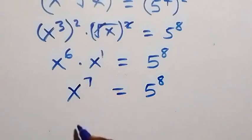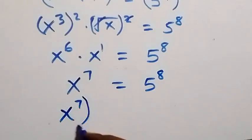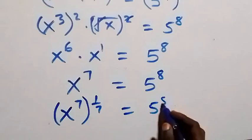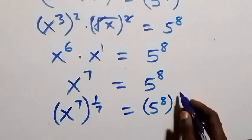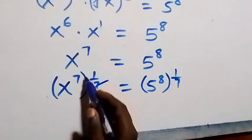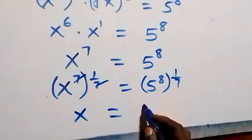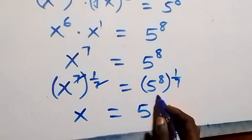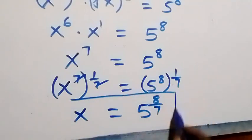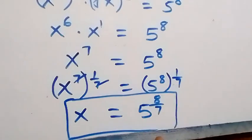To remove this power of 7, we multiply both powers by 1 over 7. So we have x raised to power 7, then raised to power 1 over 7, equals 5 raised to power 8, then raised to power 1 over 7. Since these powers multiply, x equals 5 raised to power 8 over 7. So the value of x for this given problem is 5 raised to power 8 over 7.